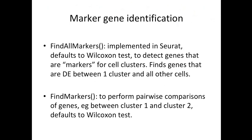For marker gene identification, the implementation in Seurat uses a function called FindAllMarkers. By default, this uses a Wilcoxon test to detect genes that are markers for a cell cluster or cell type. For example, if you have five clusters of cells, you will use FindAllMarkers to find the marker genes that are more expressed in one cluster against all other cells — for instance, cluster zero compared to the rest of the dataset. It does this for all of your clusters.